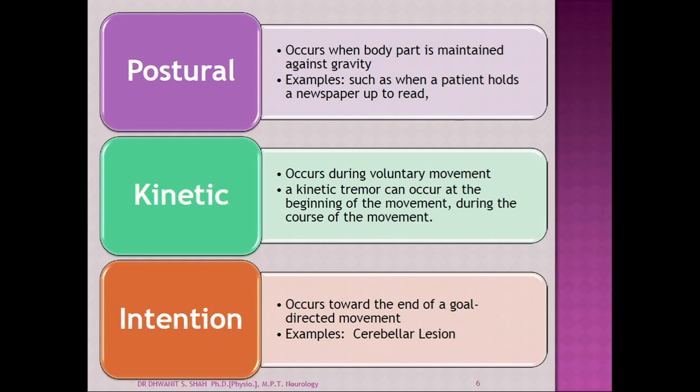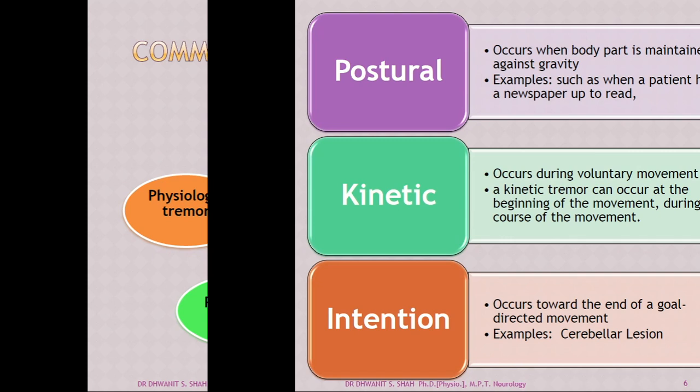The second is the kinetic tremor. This most commonly occurs during movement. A kinetic tremor can occur at the beginning of movement or during the course of movement. The third is the intention tremor. It occurs towards the end of a goal-directed movement — when reaching the goal, it starts in the last degrees at the end of the movement. It is commonly seen in cerebellar-type lesions.